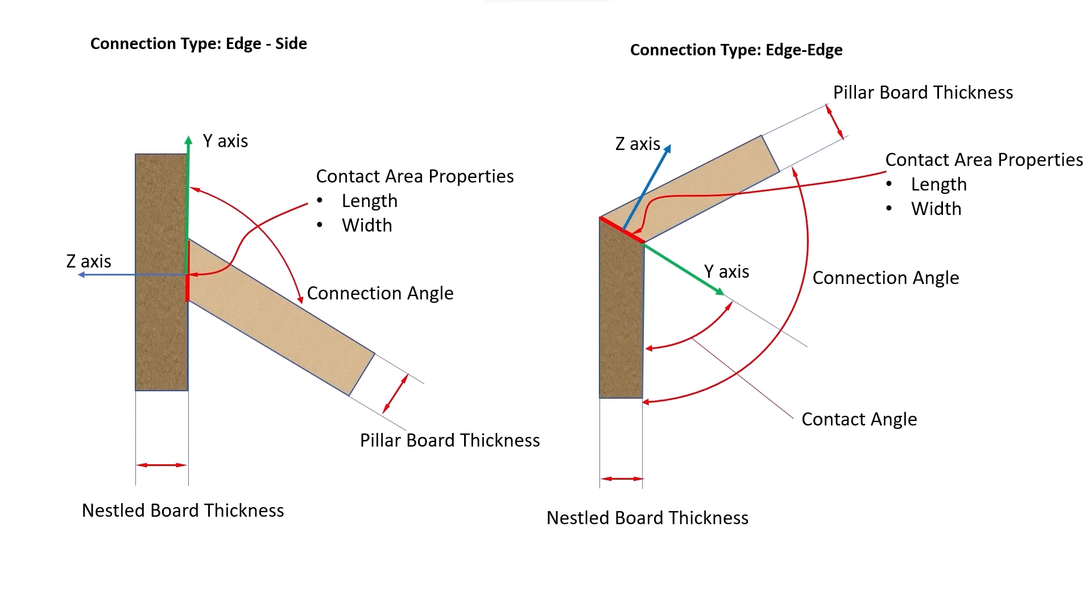For example, if the user needs the nestled board thickness and the pillar board thickness, the user can retrieve these values from the system and use them in his or her own calculations. The system can calculate not only linear lengths, such as panel thickness or contact surface width or height, but also the angles between the two panels to be connected, connection angle, and between the connection plane and the nestled plane, contact angle.